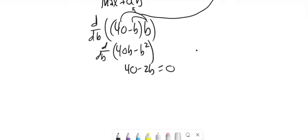And I want that equal to zero, right? I'm going to put the derivative equal to zero. Add 2B to both sides. Divide by 2.